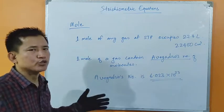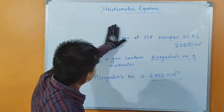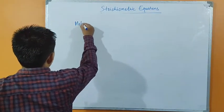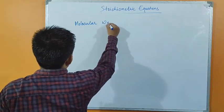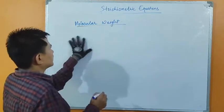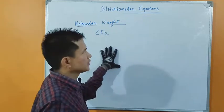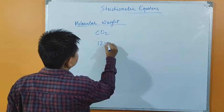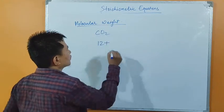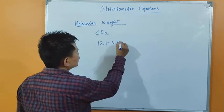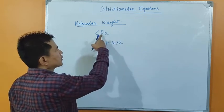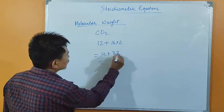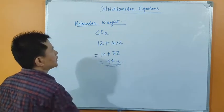Another thing we need to understand before going to chemical calculation is molecular weight of a substance. For example, what is the molecular weight of carbon dioxide, CO₂? The molecular weight of carbon is 12, plus oxygen — the atomic weight of oxygen is 16, and there are 2 oxygen atoms, so 16 × 2 = 32. So 12 + 32 = 44 grams. This is how we find molecular weight.